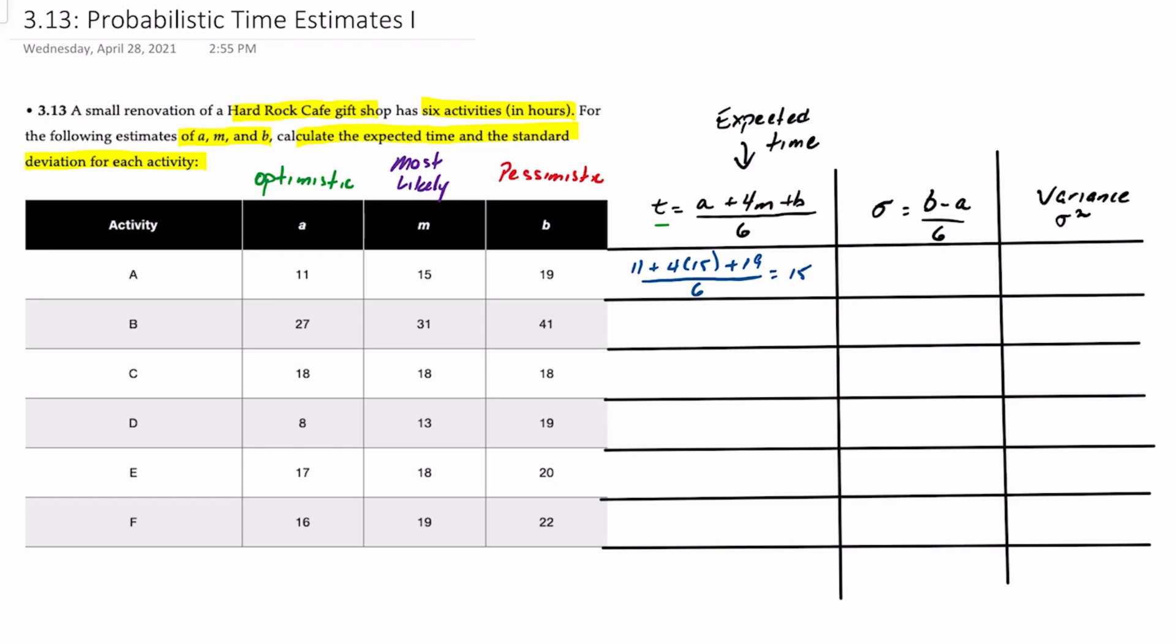If we look at activity B, here we'll take 27 plus 4 times 31 plus 41, all divided by 6. That should give us 32 hours.